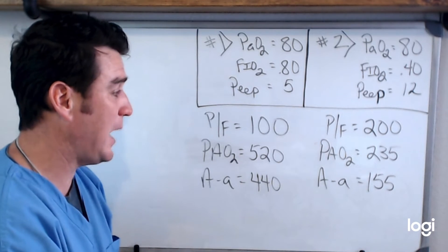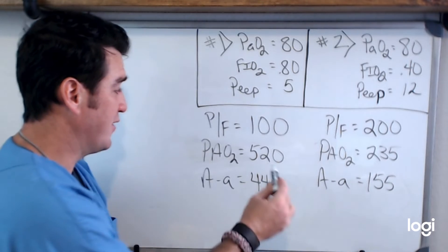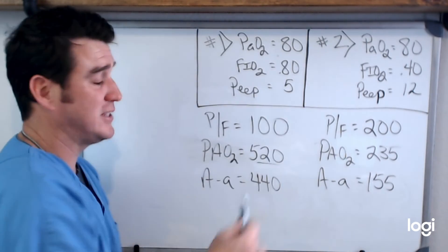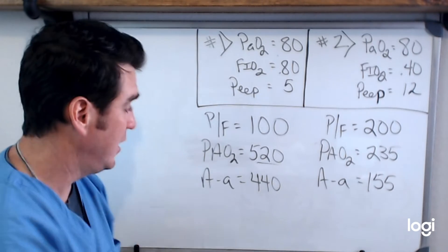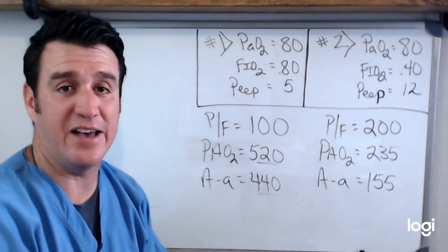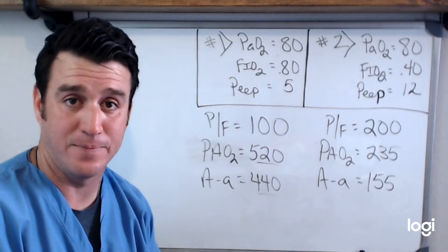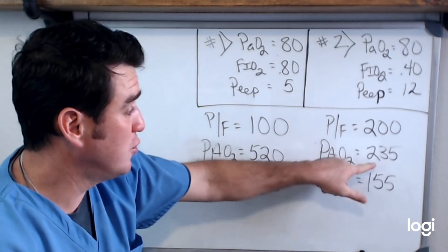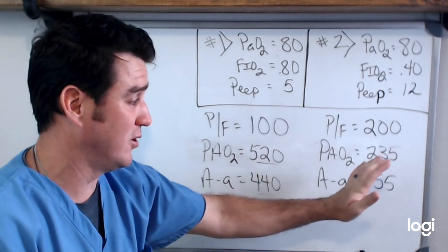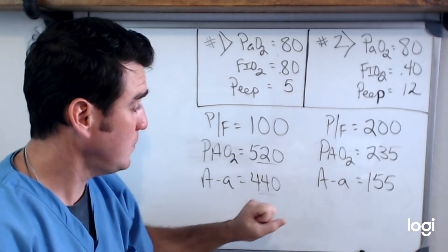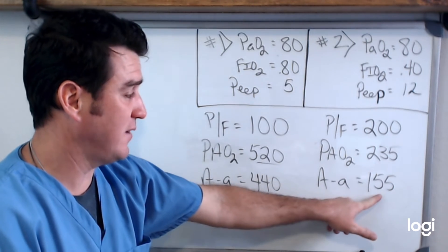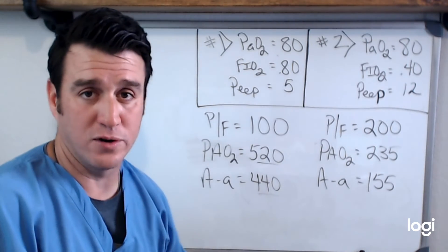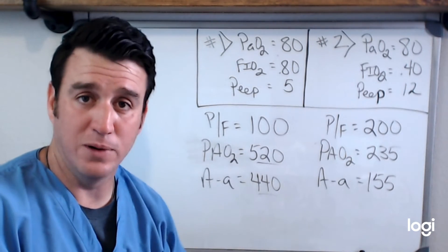If we do the A-a difference for patient one: 520 minus 80 equals 440. For patient two: 235 minus 80 equals 155. Of the 520 going into the alveoli, only 80 is crossing over into the arterial blood, meaning 440 is left behind. Over here, 235 goes into the alveoli, 155 is left behind, and 80 crosses over into the arterial blood.